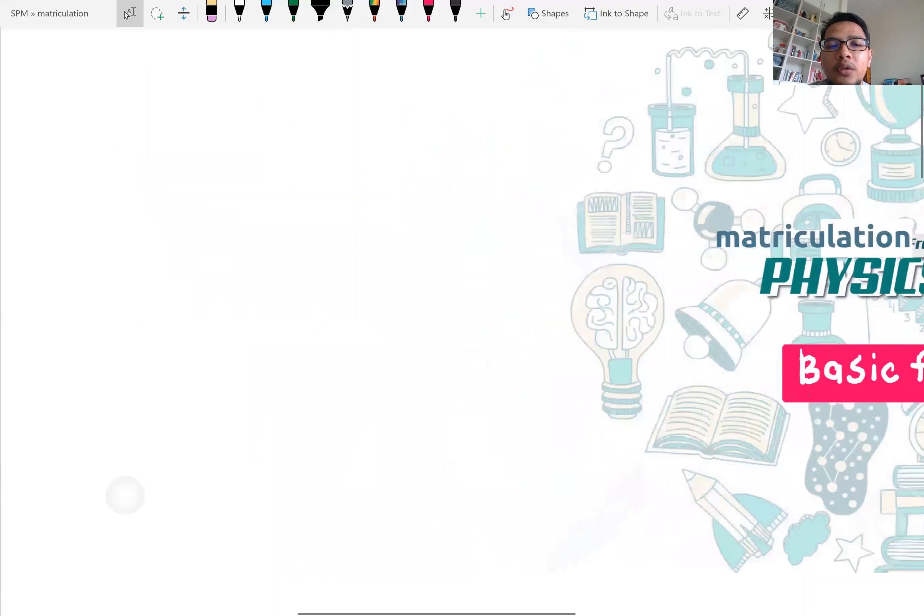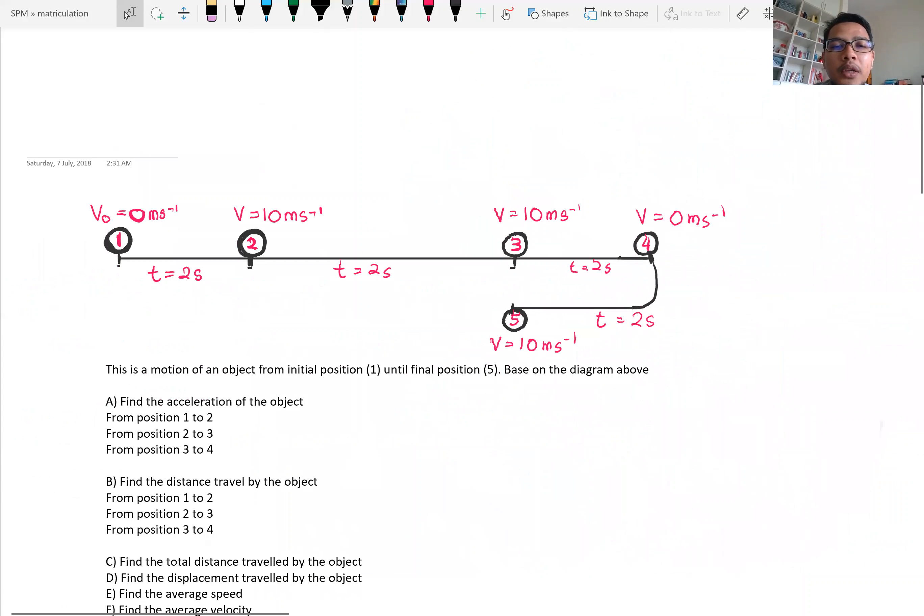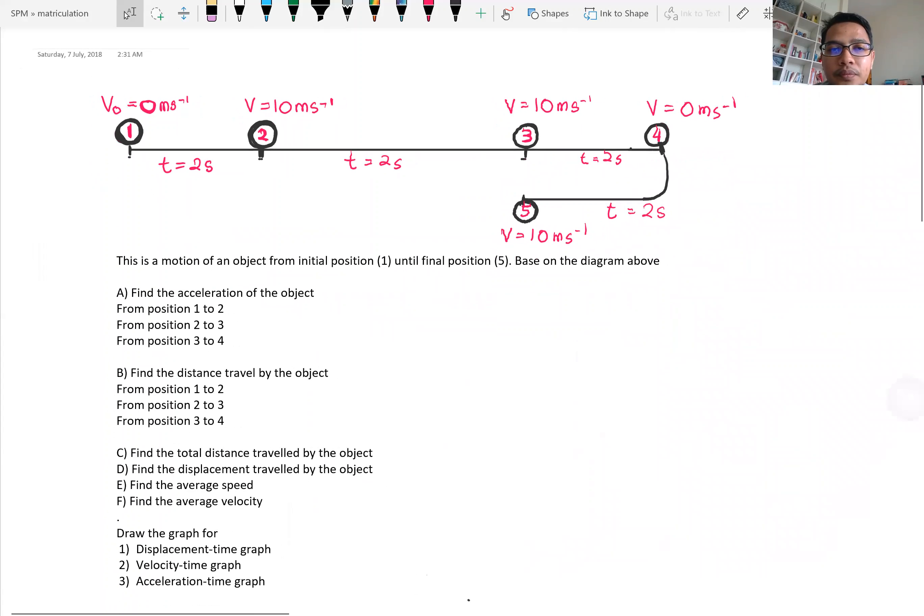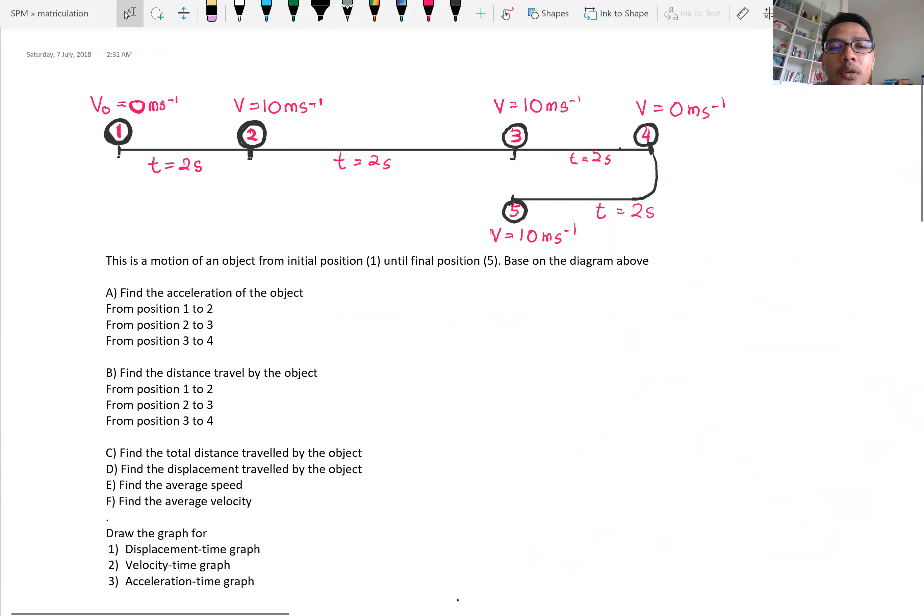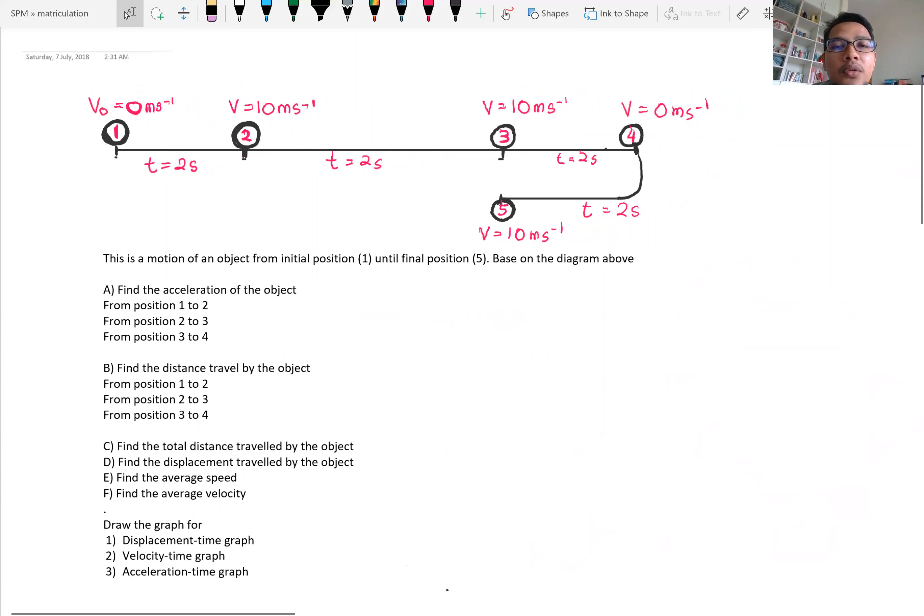Alright, so here is the question for the problem that we'll try to solve. This is the motion of object from initial position 1 until the final position 5. So based on the diagram above, you can see here starting from 1, object moves to number 2 here from 0 meter per second, the speed increases to 10 meter per second in 2 seconds.